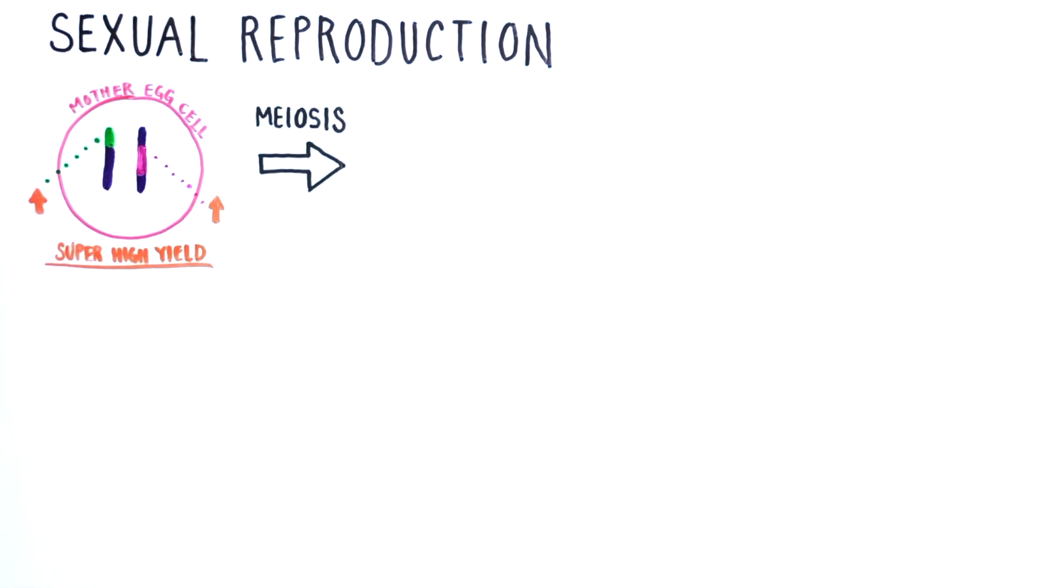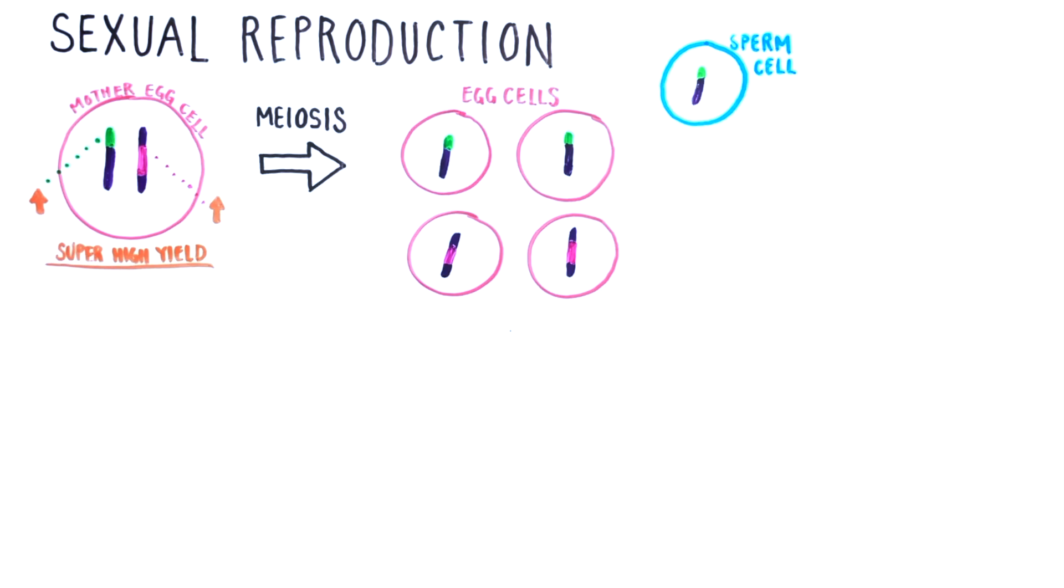A process called meiosis divides the DNA into separate egg cells. The male cell, or sperm, then fertilizes one of the egg cells and the fertilized egg begins to grow into an embryo, eventually forming a whole seed.